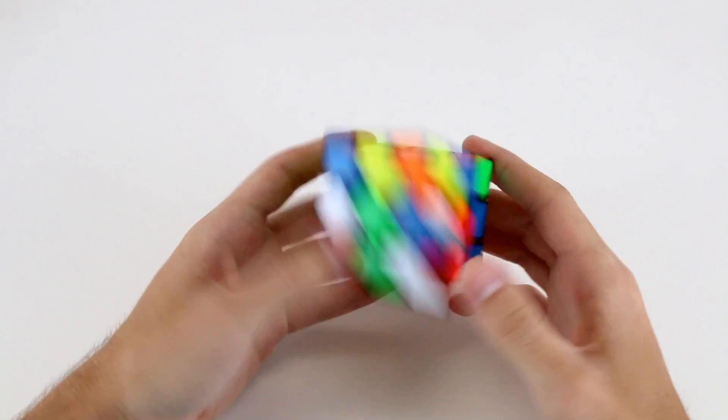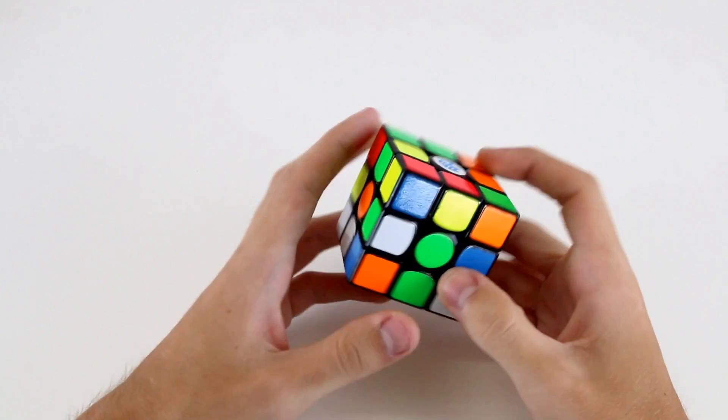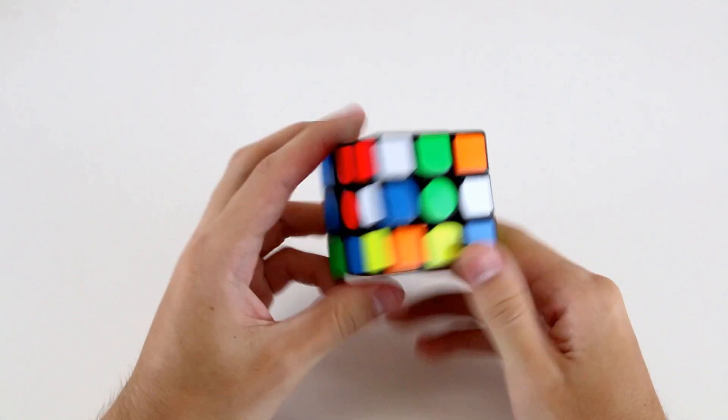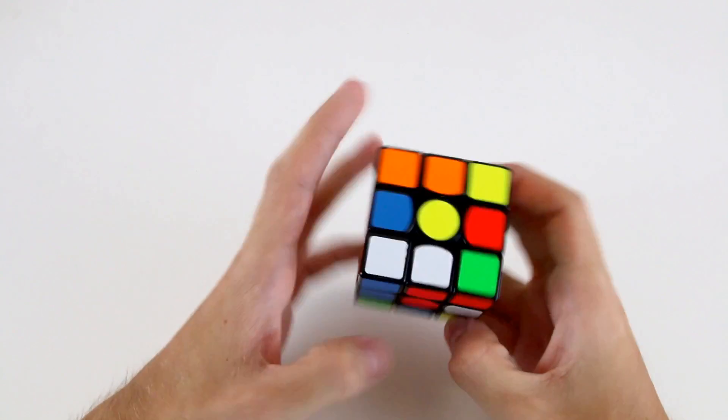Okay, again I'll start out with two white cross example solves and then three color neutral ones. So our white cross pieces are here, here, here and up here.